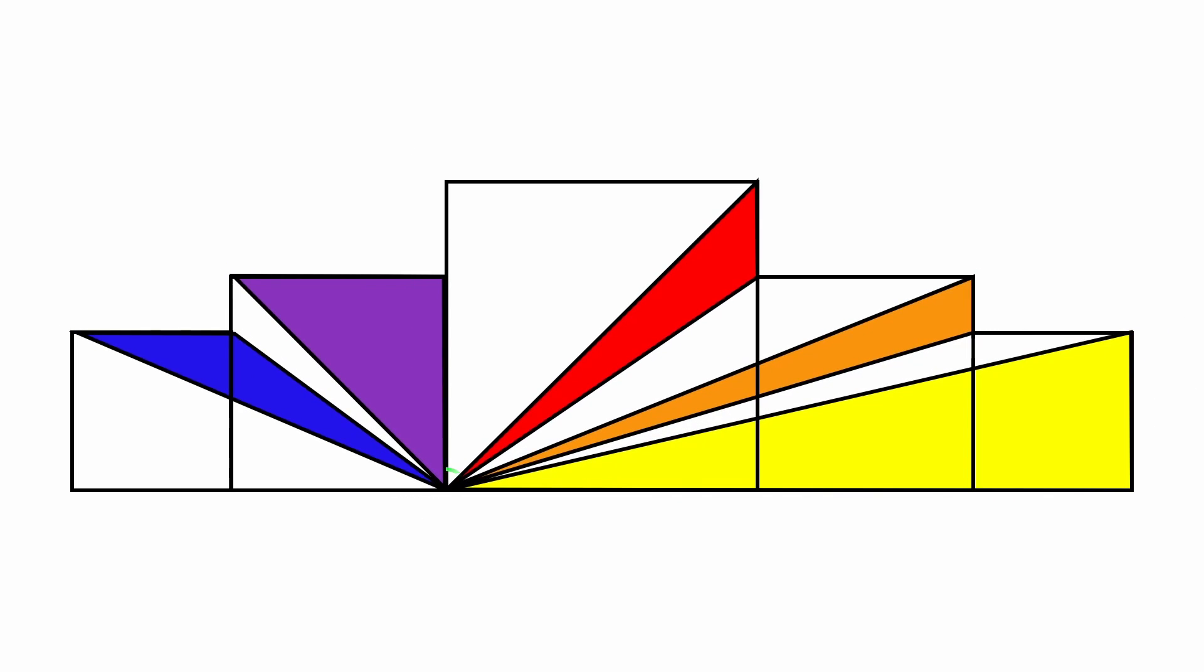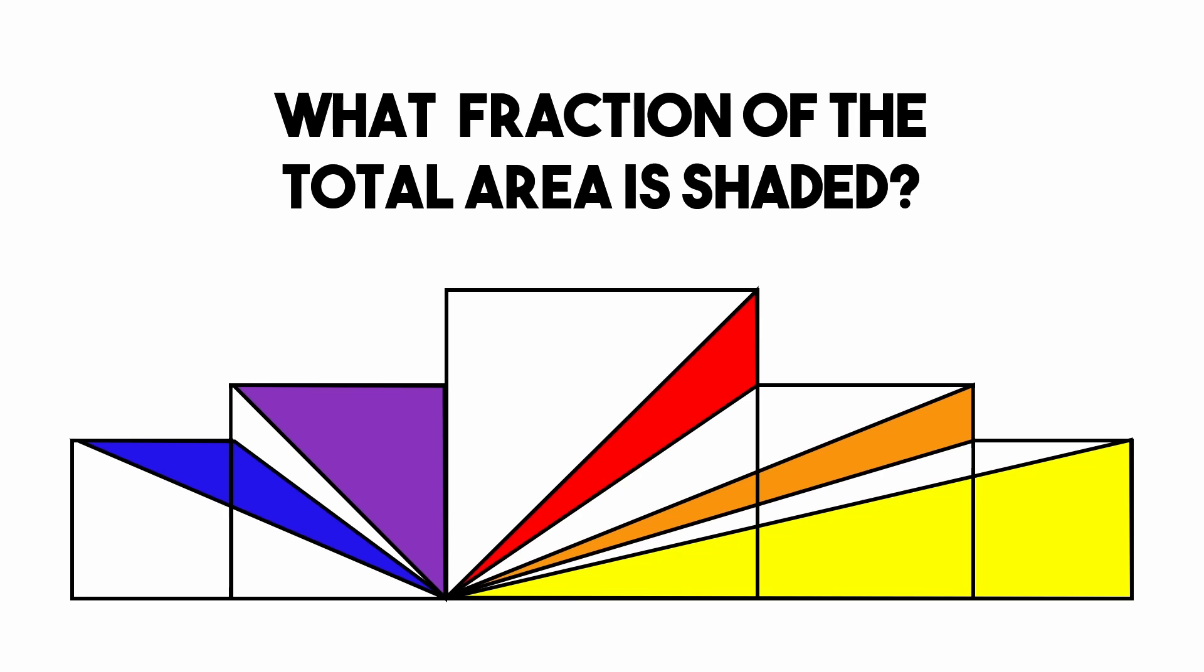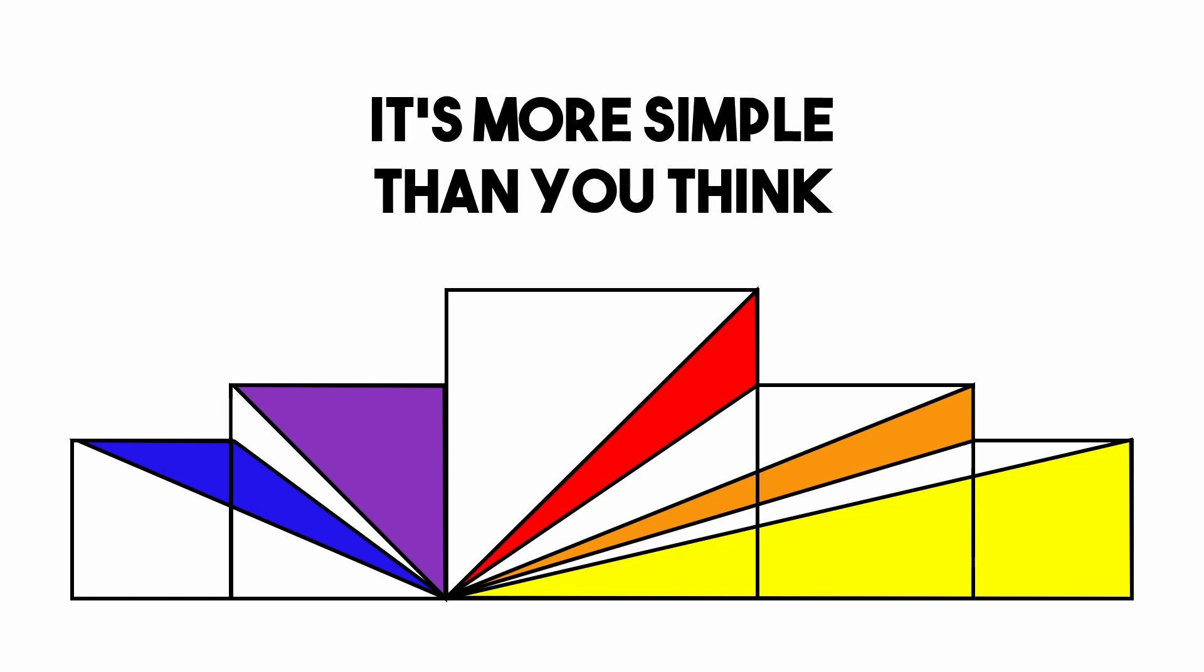We have 5 squares and 5 shaded triangles that meet at a common point. Our goal is to find what fraction of the total area is shaded without knowing any numerical values related to the triangles or the squares. Now I know this seems impossible, but there's an elegant way to find the answer. Here's how we can do it.